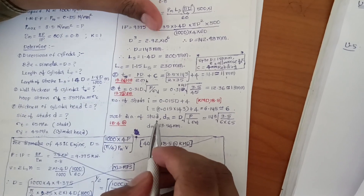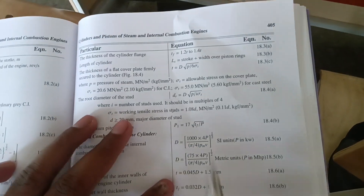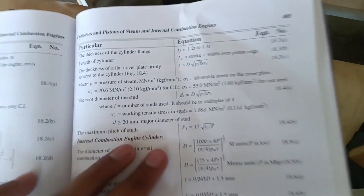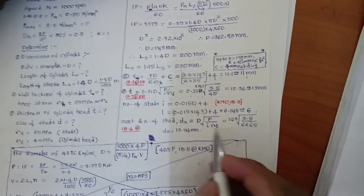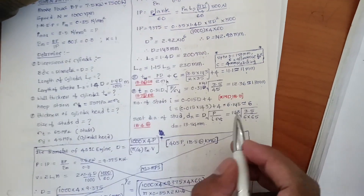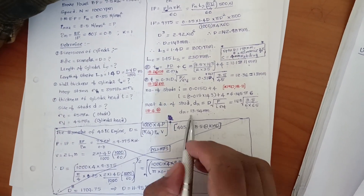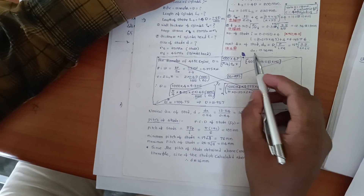Next, find the root diameter of the stud d_r using equation 18.4 from the data book: d_r equals the square root of (π × D² × P) / (4 × i × sigma_t). Substituting D equals 143 mm, P equals 3.5 (maximum pressure), i is the number of studs, and sigma_t equals 65 MPa. After calculation, d_r equals approximately 13.54 mm.